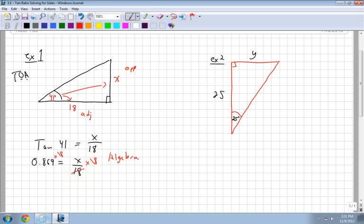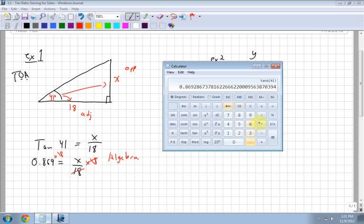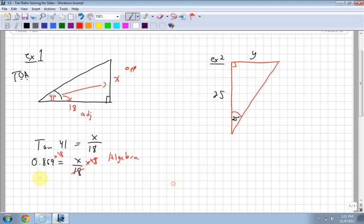On the right side, the 18 cancels with the bottom. So on the left side, I have my 0.869 times by 18, which is equal to 15.6. So 15.6 is equal to x. That's how to solve if your number is on the bottom, and you can just simply multiply.